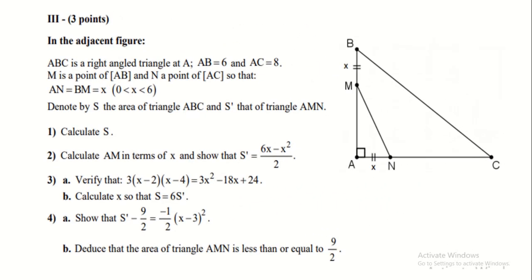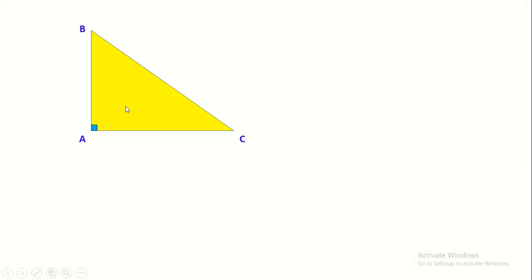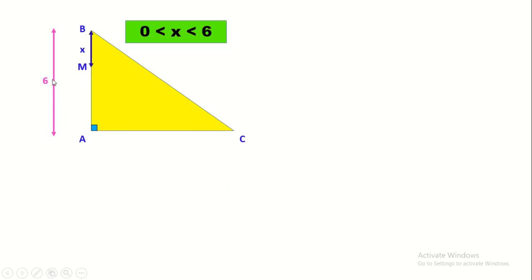Now let's start with polynomials. We have ABC as a right triangle at A such that AB equals 6 and AC equals 8. M is a point on AB such that BM equals X, and N is another point on AC such that AN also equals X. Let S be the area of triangle ABC and S' the area of triangle AMN. We should keep in mind the condition 0 < X < 6.